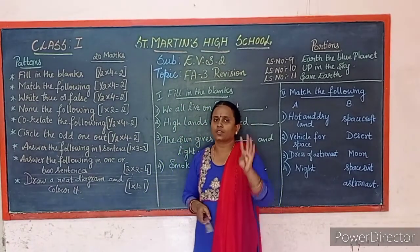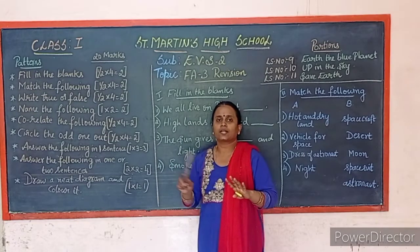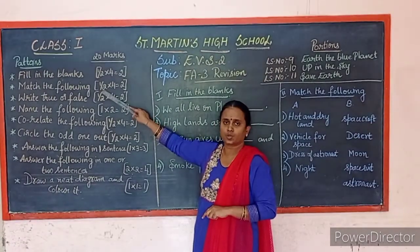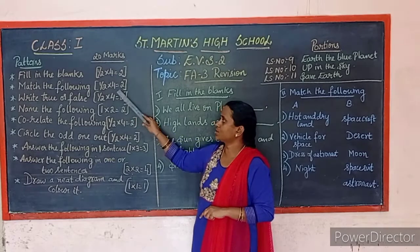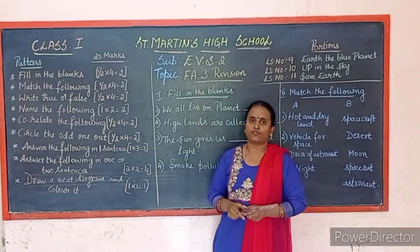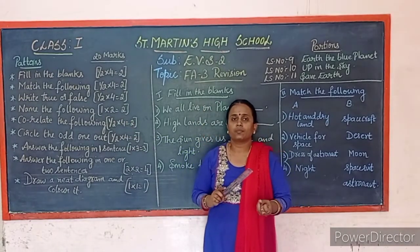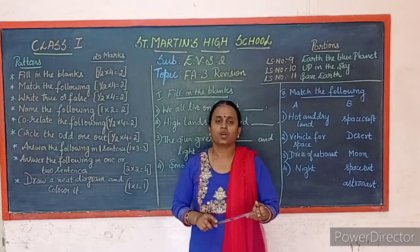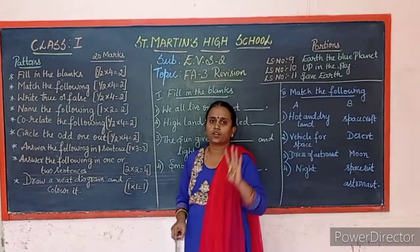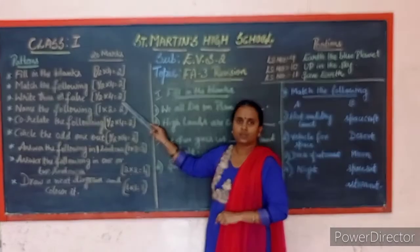For match the following, you will have 4 questions in column A and 5 options in column B. You have to select the correct one — each question carries half a mark, total 2 marks. Next, true or false: if the statement is correct, write true; if wrong, write false. You will have 4 questions, each half a mark, total 2 marks.